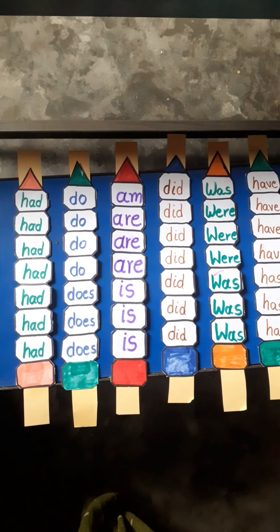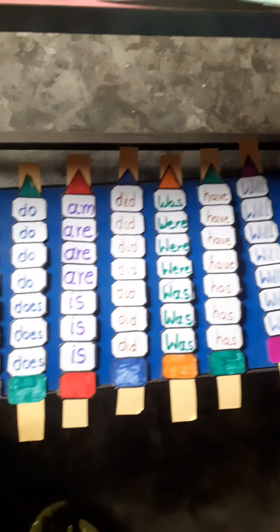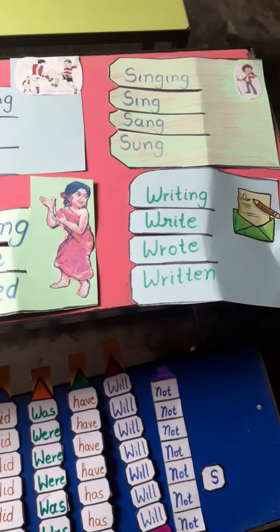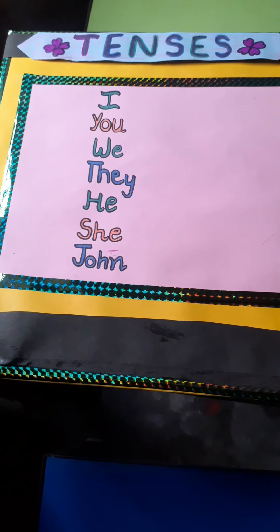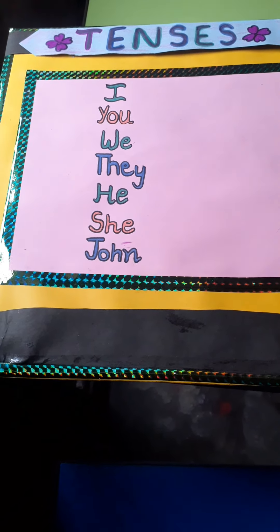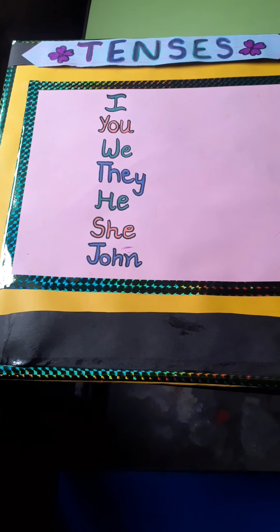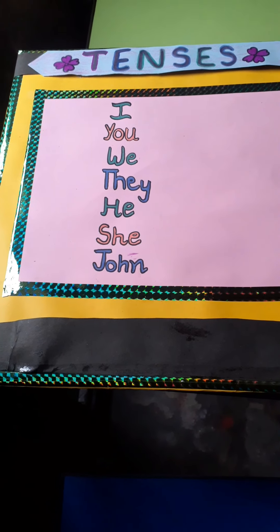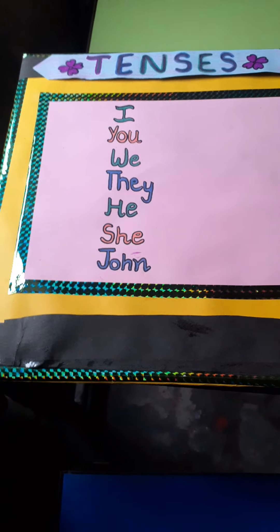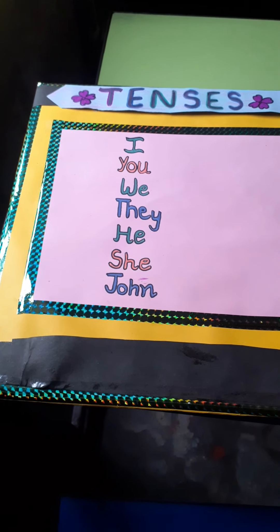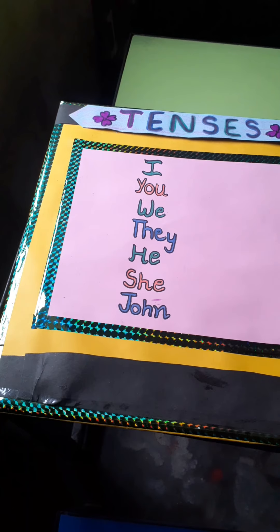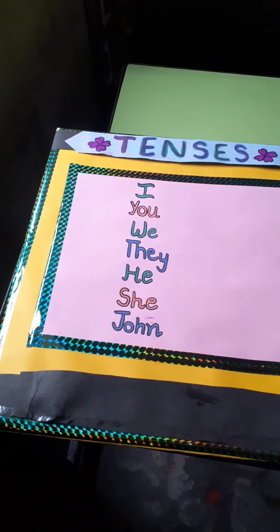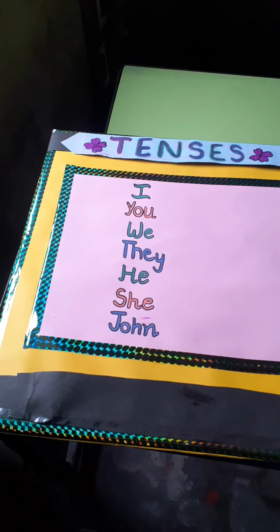So friends, these are helping verbs, these are some main verbs, and these are the subjects. Now let's make simple past tense, which is also called past indefinite. For past, we need the second form of the verb. We have the subjects here and we need the second form.